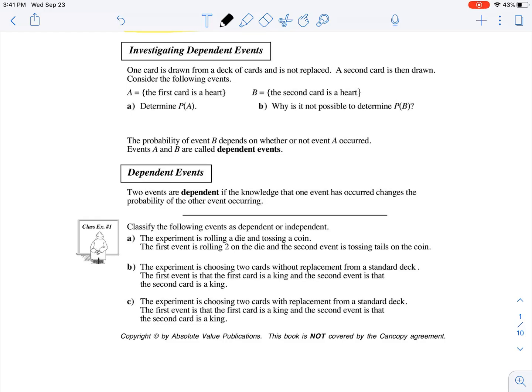So the first card is a heart, and event B is the second card is a heart. So the difference between these questions is that in this situation, the card is not being replaced, which is going to make a big difference.